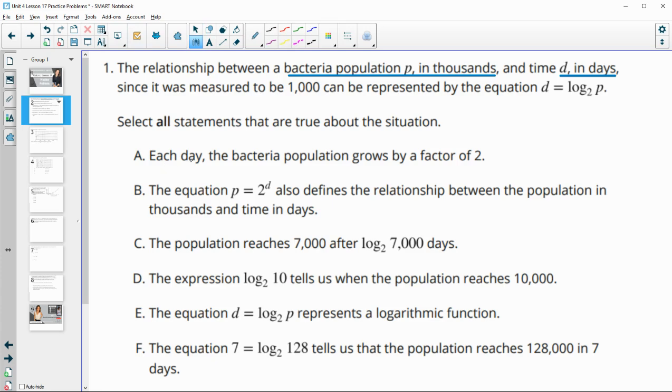So this one says each day the bacteria population grows by a factor of two. I personally think it's kind of hard to look at that in logarithmic form, so I'm just going to rewrite this in exponential form. We'd have 2 to the D equals the P. So 2 to the days equals the population. For every one day, the population grows by a factor of two. This is true.